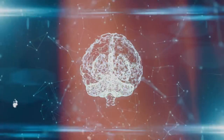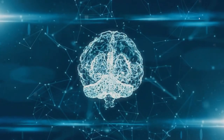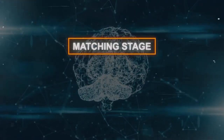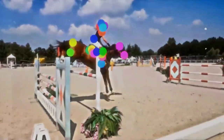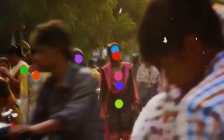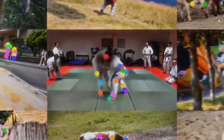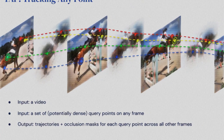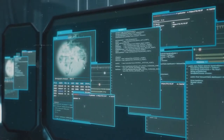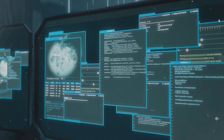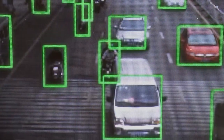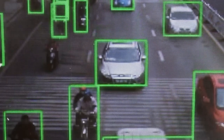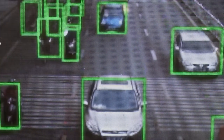This revolutionary algorithm consists of two remarkable stages: matching and refinement. In the matching stage, TAPR scrutinizes each frame of a video sequence with meticulous precision. Its mission is to find the perfect match for a specific point of interest, known as the query point, identifying the most likely related point frame by frame to flawlessly track its movement throughout the entire video.